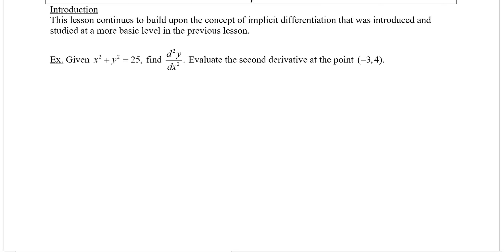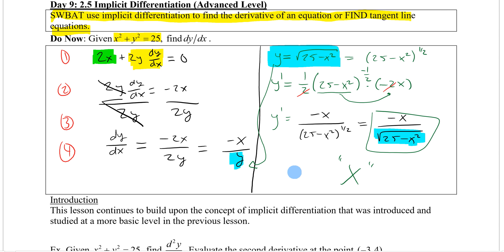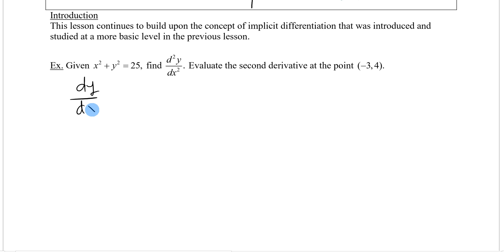This lesson builds off the previous one. The first example: given the curve x squared plus y squared equals 25, find the second derivative and evaluate the second derivative at the point negative three comma four. The do now helps here because we already solved for the first derivative, which is minus x over y. Taking the derivative of that derivative will give the second derivative.